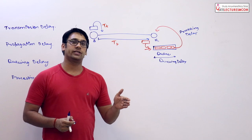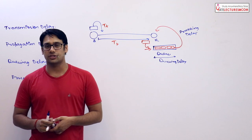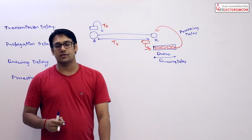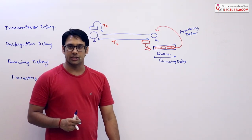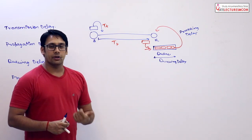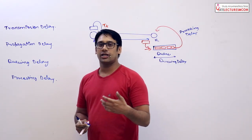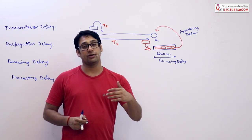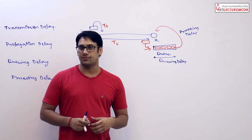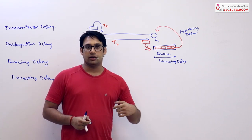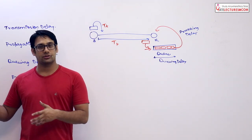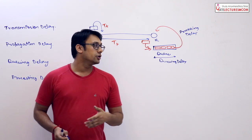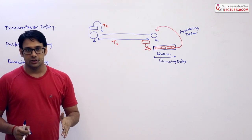Even if the data packet size changes, we can still find the exact transmission delay. However, queuing delay depends on the state of the system — the state of the processor at the receiver. Processing delay also varies by processor: an old Pentium 3 or Pentium 4 processor takes more time than a latest-generation processor. Similarly, a mobile phone processor is less powerful than a computer processor, so it may take longer to process a data packet.